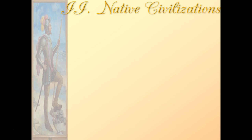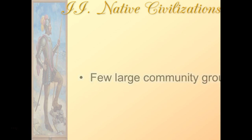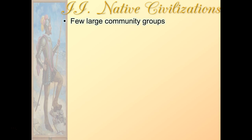Roman numeral two is going to talk about native civilizations. There were millions of Native Americans living in the New World when Europeans began to arrive. However, it is important to note that there were actually very few large community groups. To survive and catch food made a sedentary lifestyle impossible, so you wouldn't see many big populated cities. Most Native American groups, no matter what tribe, did not consist of large community groups, but rather smaller groups that traveled chasing food — most notably the buffalo. An exception to this are the tribes in Mesoamerica, which had the largest of the civilizations.